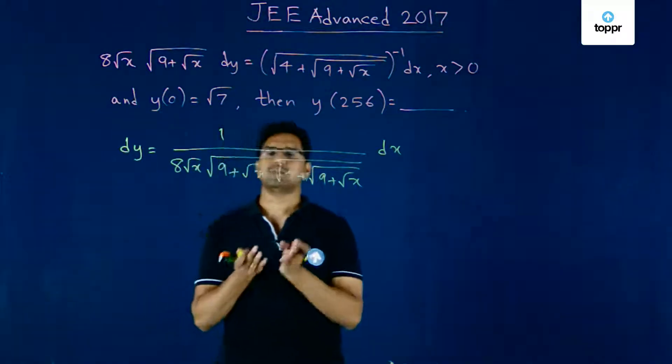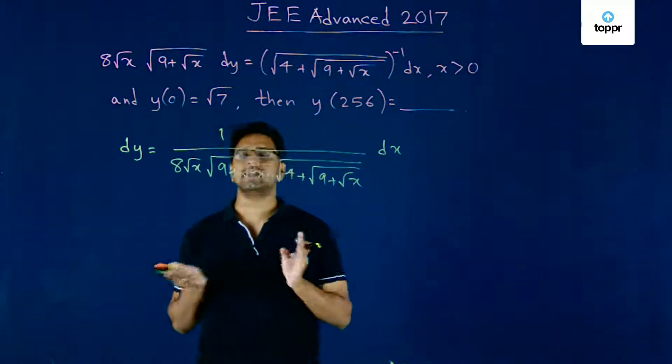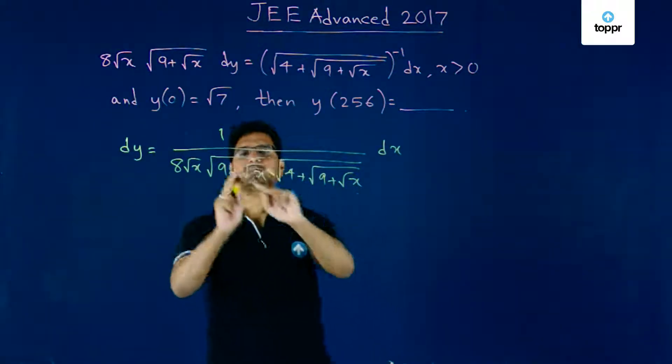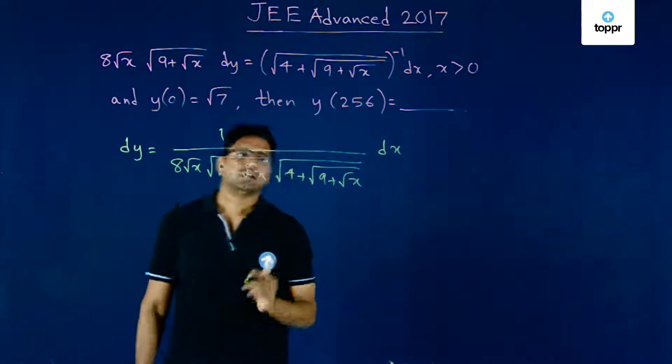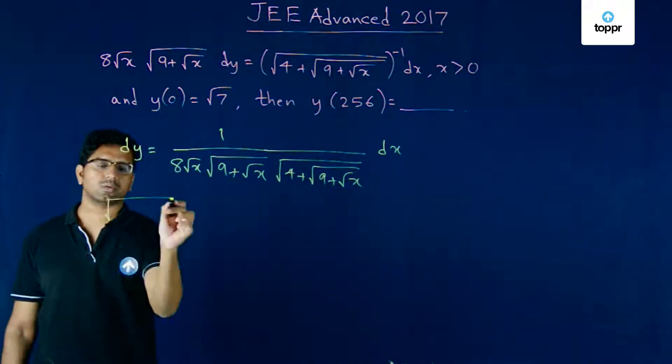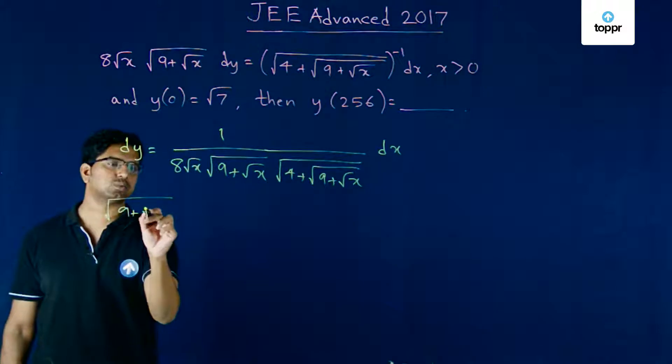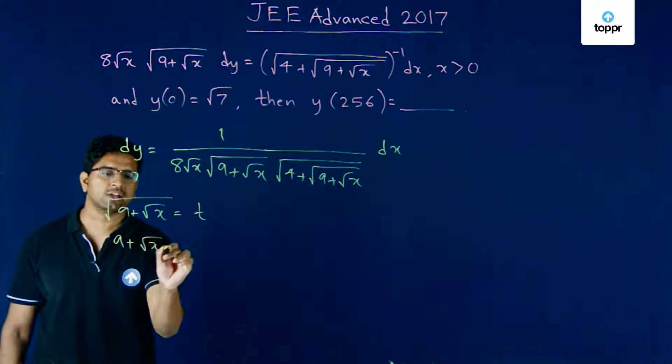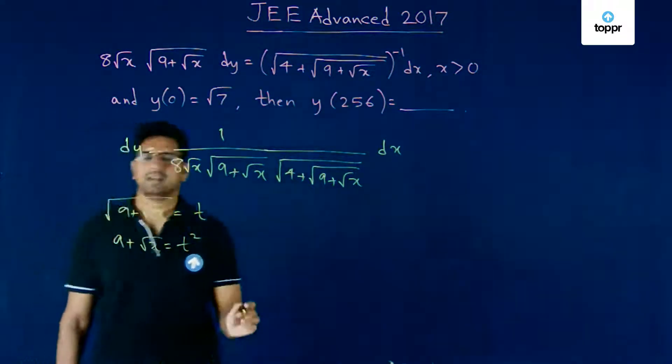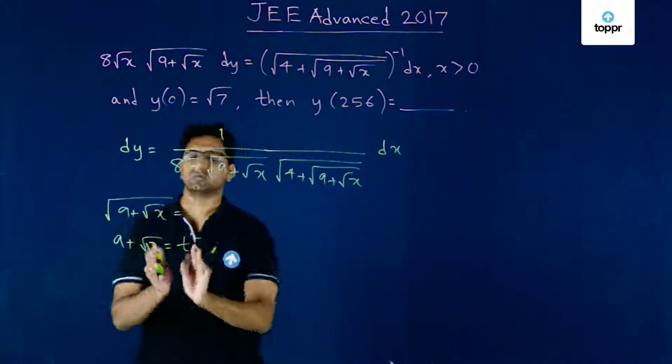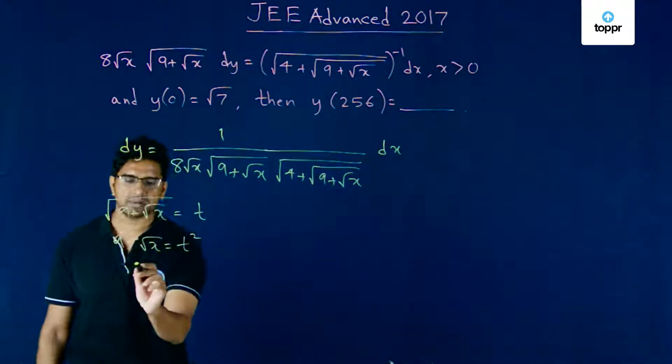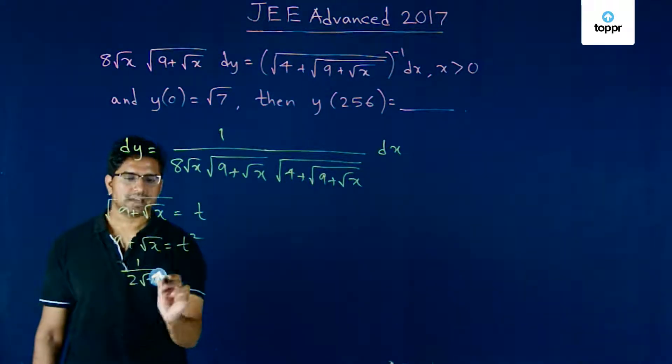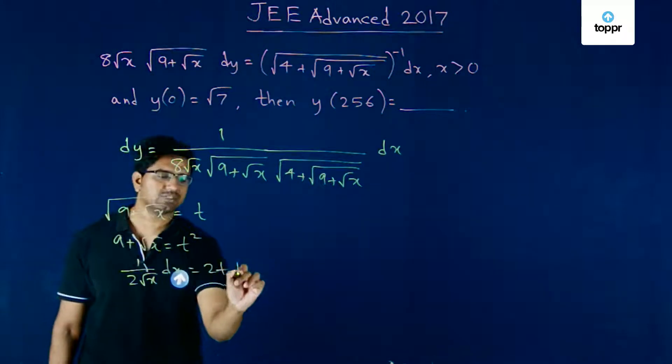We will have to make a substitution, and the best candidate would be this variable: root of 9 plus root x, because it appears everywhere. So if we make the substitution that square root of 9 plus root x equals t, or in other words 9 plus root x equals t squared, we can find the relationship between dx and dt.